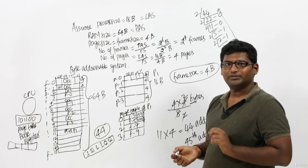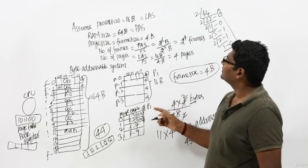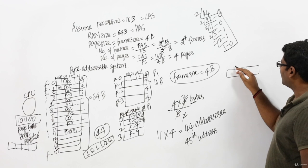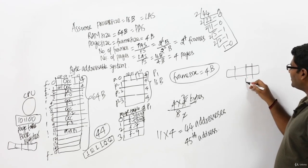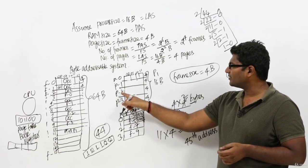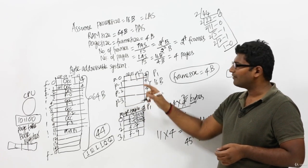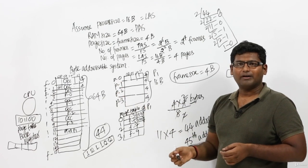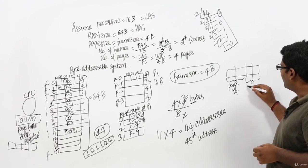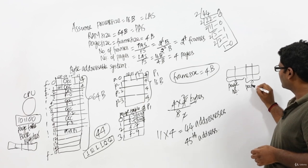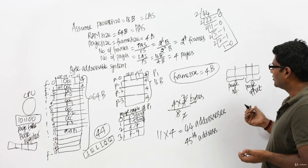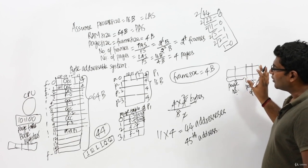Out of these 4 bits, 2 bits are used to index inside a page — once we reach the page, we need 2 bits to find the exact byte. The other 2 bits indicate the page number. So 2 bits indicate the page number and 2 bits indicate the byte number within the page, which we call the page offset. This is how the logical address of process P1 looks.